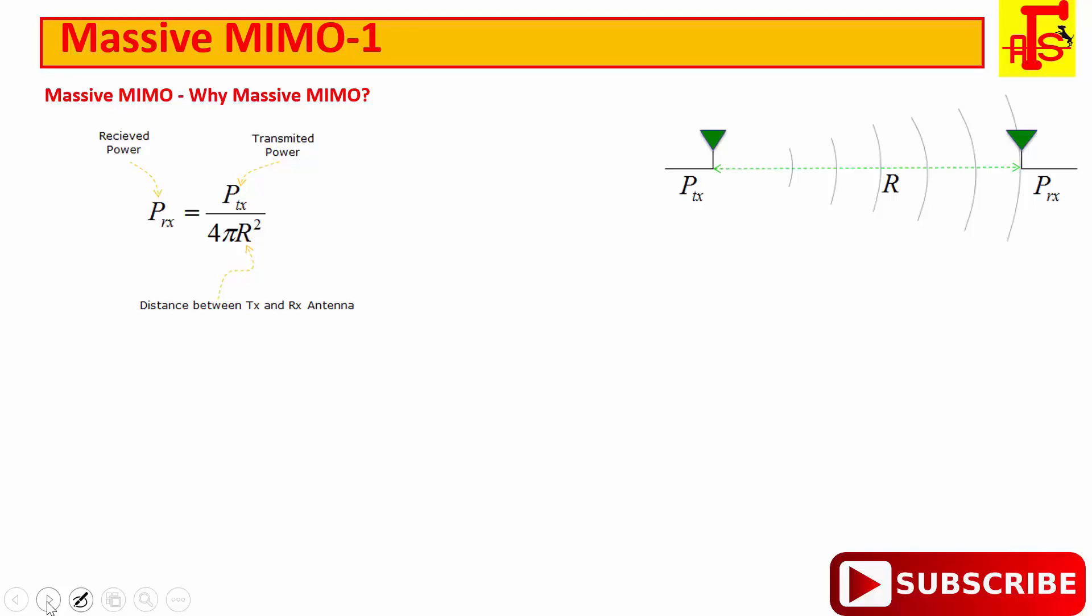In a real scenario, we know that received signal power is also affected by frequency and receive antenna gain. PR = PTX / (4πR²) × λ² / 4π × GRX. GRX is the received antenna gain.